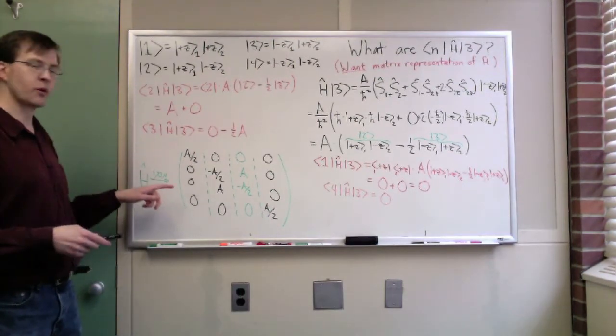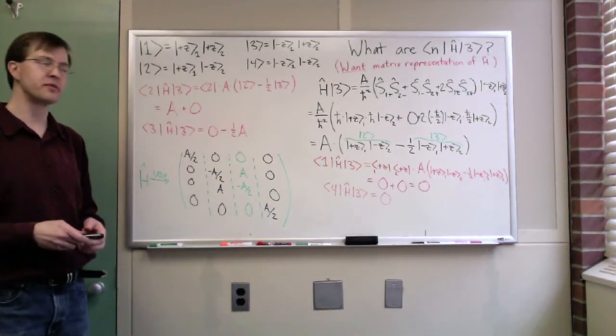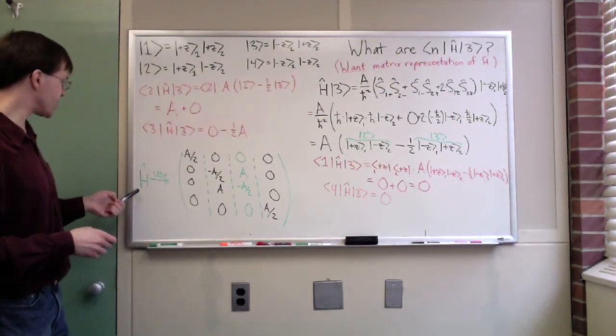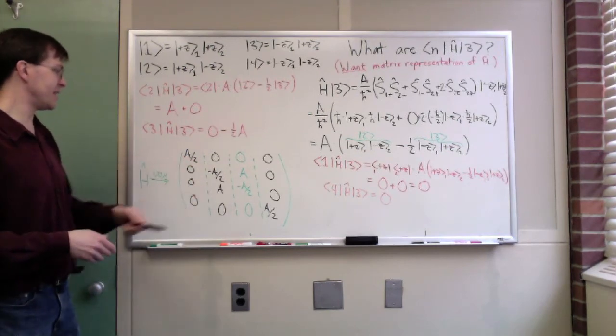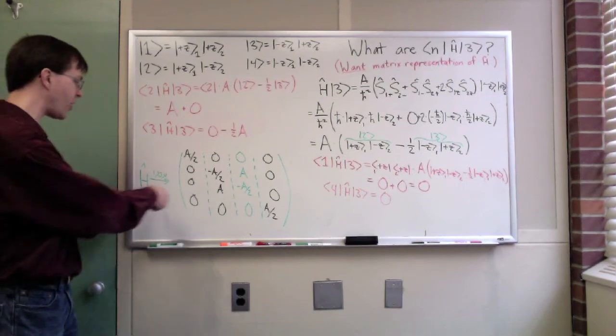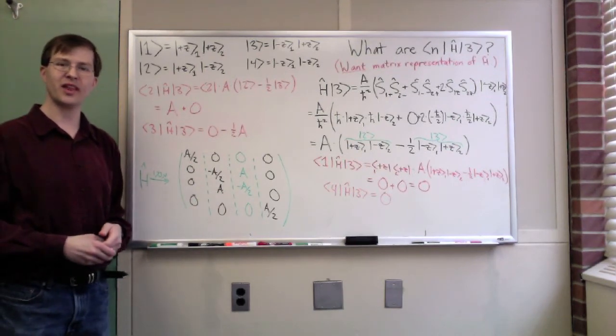This is what the full matrix representation of the Hamiltonian will look like once we've done this whole process for multiple pieces, for all the different pieces. We will have h hat turning out to look like this thing. And with that, we've done our calculation, we've found the matrix representation we wanted. Enough of that.